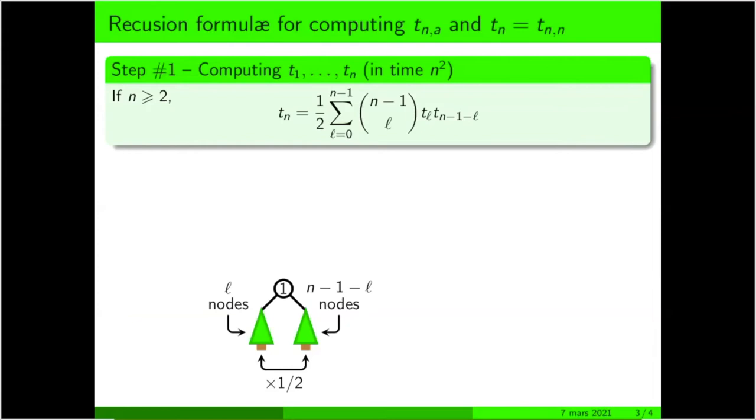Imagine you want to count trees with n nodes and n is at least two. Then the root will have label one, and otherwise you should just choose the number l of nodes that will go in the left subtree, and then there will be n minus one minus l nodes in the right subtree.